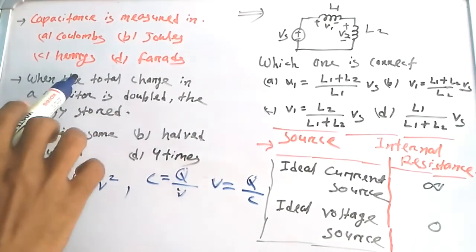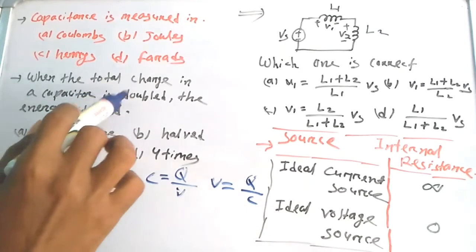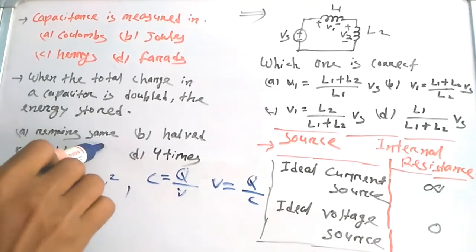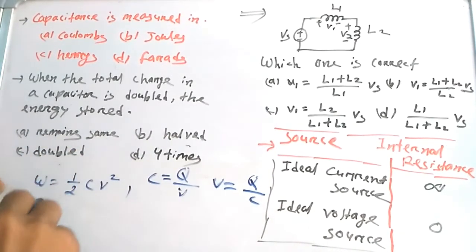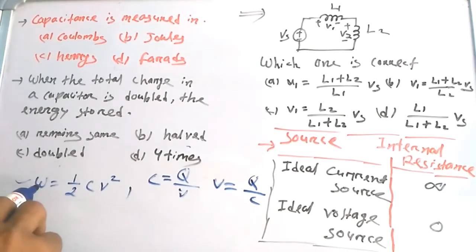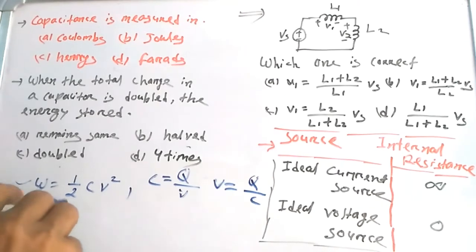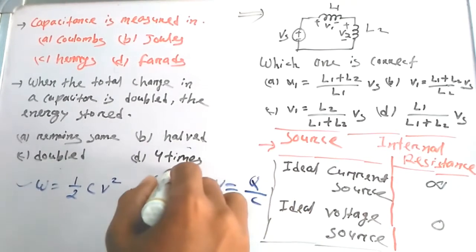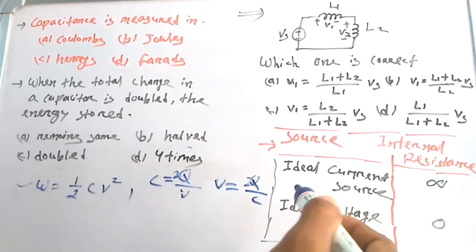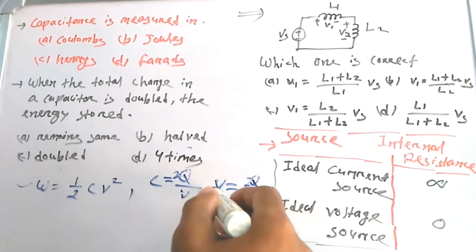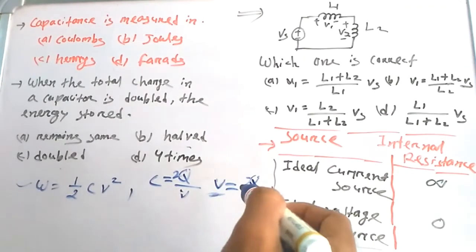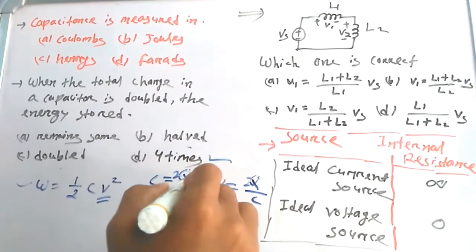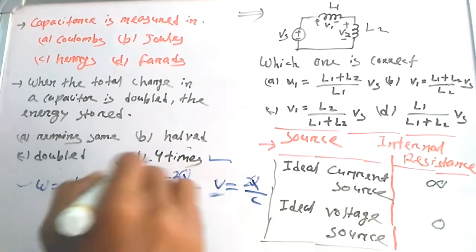Next question: when the total charge on a capacitor is doubled, the energy stored — options are: remains same, half, double, or four times. As we know, W = ½ C V². If charge Q is doubled to 2Q, then voltage V = Q/C also doubles to 2V. Since energy depends on V², doubling the voltage makes the energy four times. So option D — four times — is the correct answer.